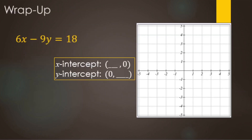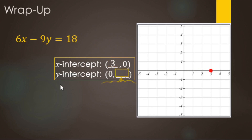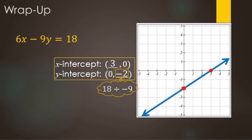Remember: whenever we're doing standard form graphing, we graph by intercepts. Find the X-intercept by dividing the constant by the coefficient in front of X. Find the Y-intercept by dividing the constant by the coefficient in front of Y. For example: 18 divided by 6 makes 3 for the X-intercept, and 18 divided by negative 9 makes negative 2 for the Y-intercept. Plot those two points, draw the line, and move on to the next question.